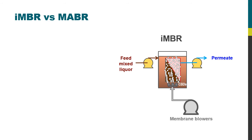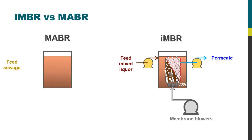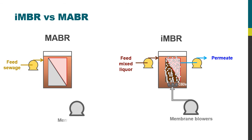Now if you compare that to the MABR — it still contains a tank for the membrane, but in this case it is fed not with mixed liquor but with the wastewater feed. The membrane tank still contains the membrane, and the membrane is still fed with air or possibly oxygen, but in this case it is the air or oxygen which passes through the membrane and not water.